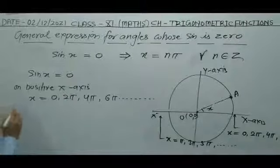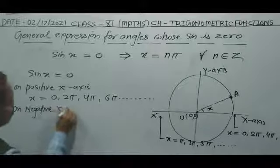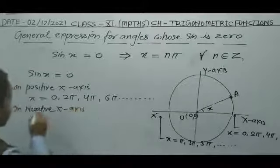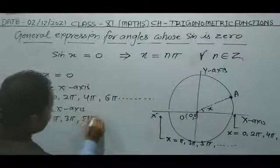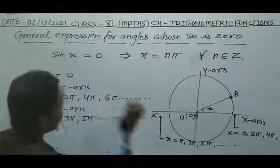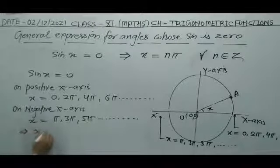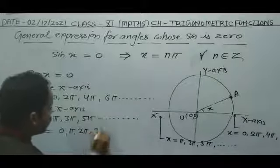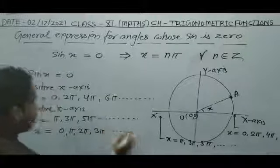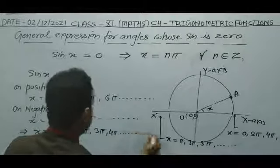On the negative x-axis, sin x equals zero when x is equal to π, 3π, 5π, and so on. Combining both positive and negative x-axis values, we get x equal to 0, π, 2π, 3π, 4π, and so on.